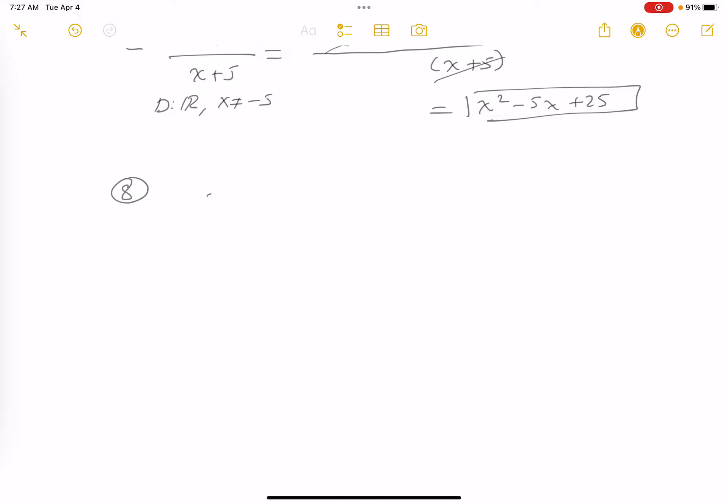Okay, for number 8, what do we see? x cubed minus 27. On bottom, you see 3x squared minus 27.